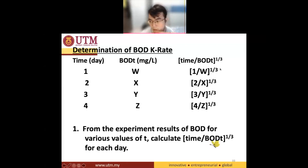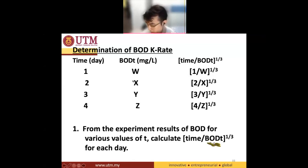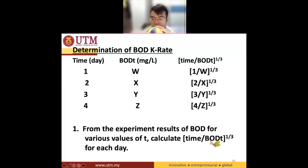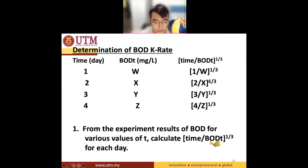After the second day, you go to the lab and take out the second bottle and check the DO. You calculate the BOD to be X. Then you obtain the value: 2 divided by X — where 2 is our time, divided by our BOD X, BOD 2 — to the power of one third.